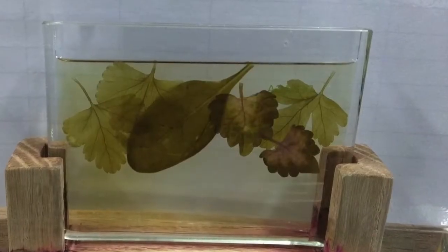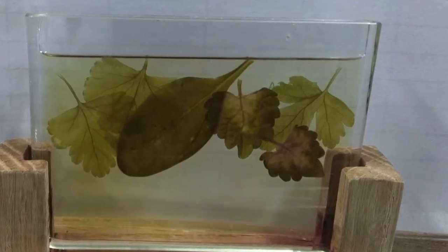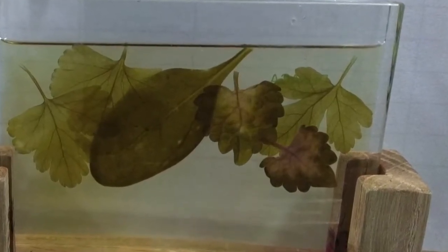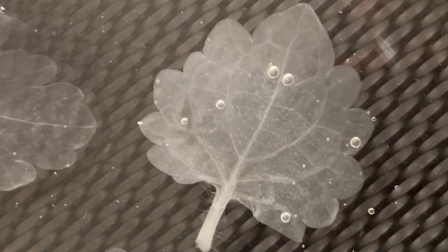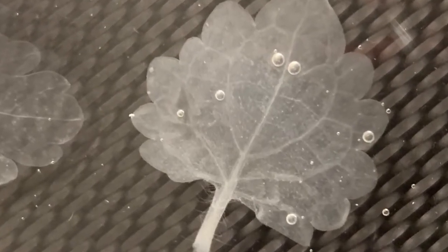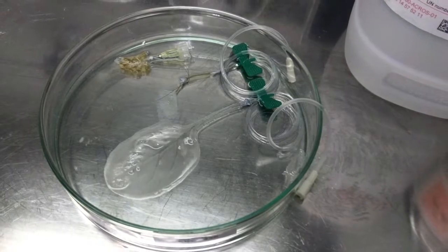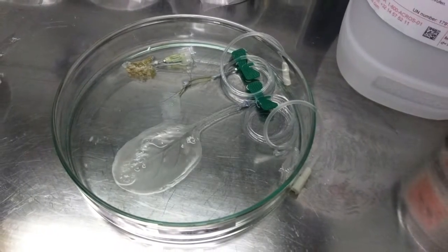To obtain completely decellularized leaves it was necessary to follow the decellularization with the bleaching process. The decellularized leaves were treated 48 hours with the bleaching solution with 99% sodium hypochlorite and 1% Triton X. After that, a few washing steps with deionized water were necessary.